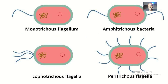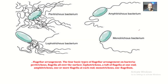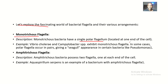Let's explore the fascinating world of bacterial flagella and their various arrangements. Monotritus flagella have a single polar flagellum located at one end of the cell. Examples of bacteria that are monotritus include Vibrio cholerae and Campylobacter species, which exhibit monotritus flagella.